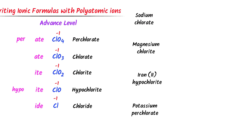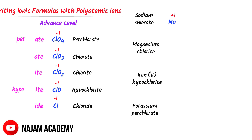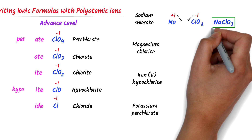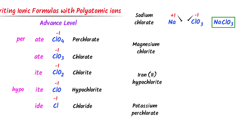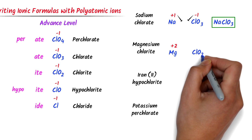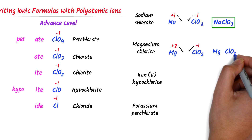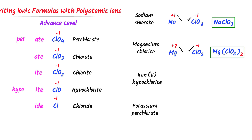Consider these ionic compounds. In case of sodium chlorate, sodium is in group 1 with oxidation state positive 1, while the chlorate ion carries negative 1 charge. I cross their charges and write NaClO₃ — sodium chlorate. In case of magnesium chlorate, magnesium has oxidation state positive 2, and the chlorite ion ClO₂ carries negative 1 charge. I cross their charges and get Mg(ClO₃)₂ — magnesium chlorate.